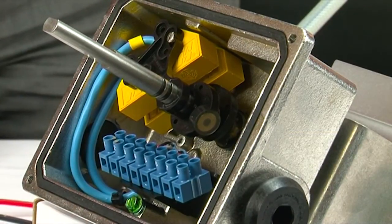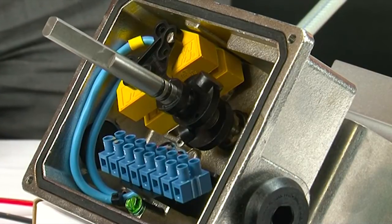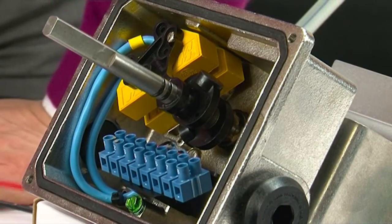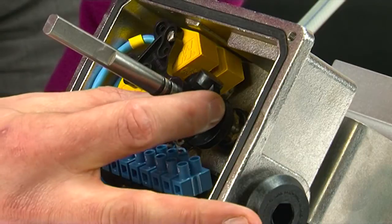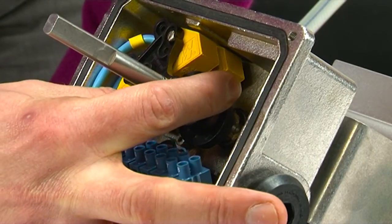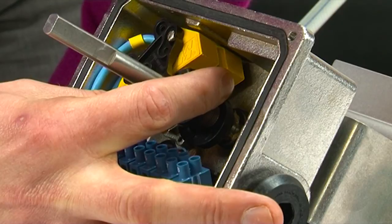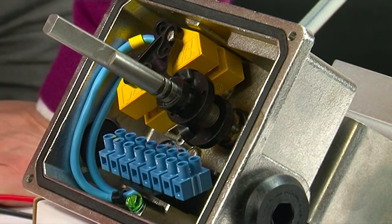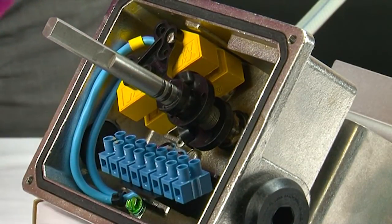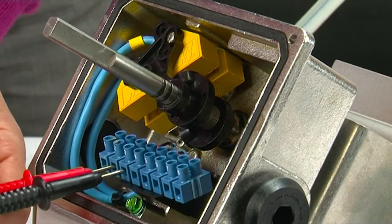The next thing to do is to stroke the actuator into the open position and set the top switch. Again this can be done by depressing the cam, rotating the striker in front of the sensor and releasing so it locks back in place, and then verifying the reading using the meter.